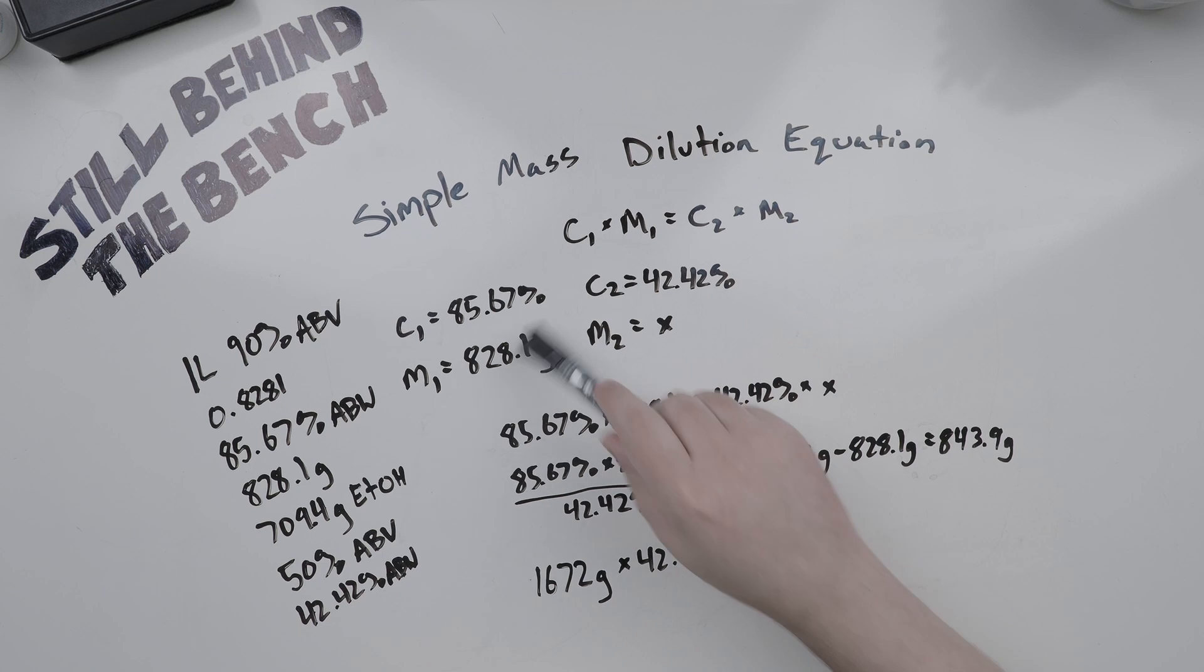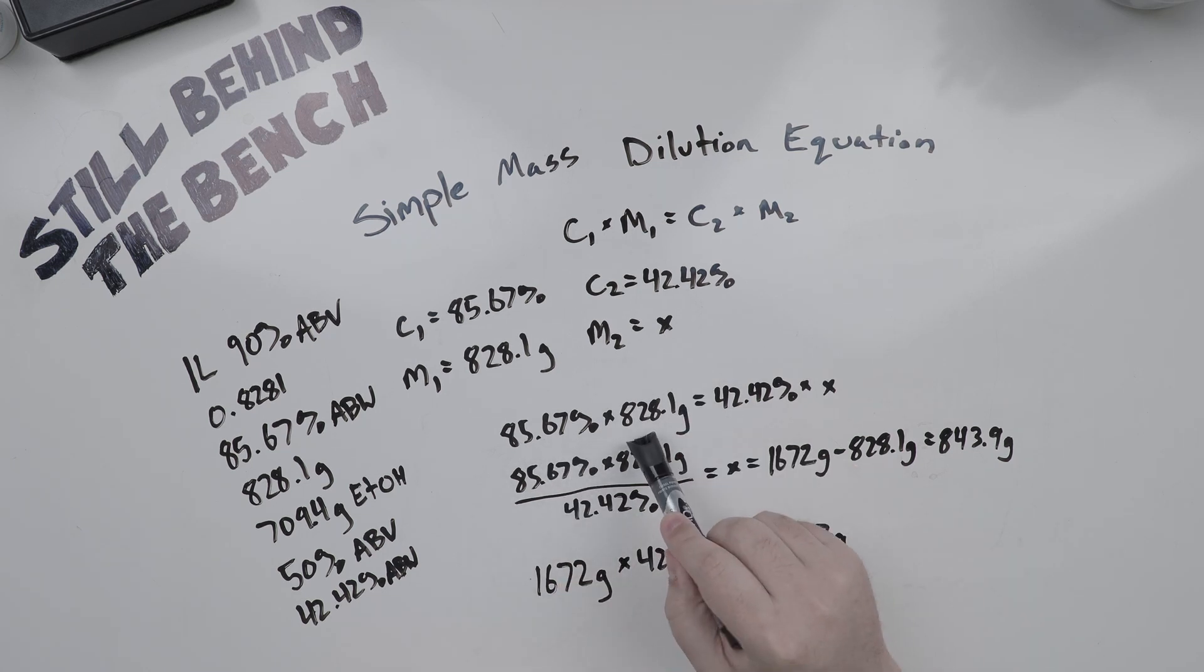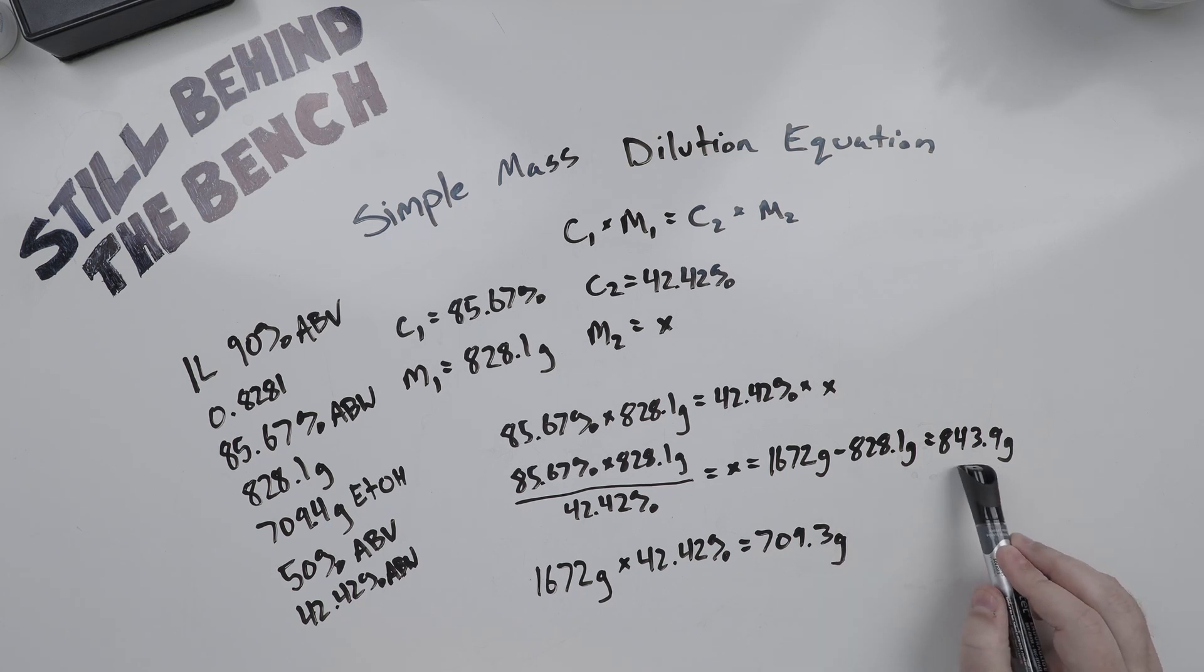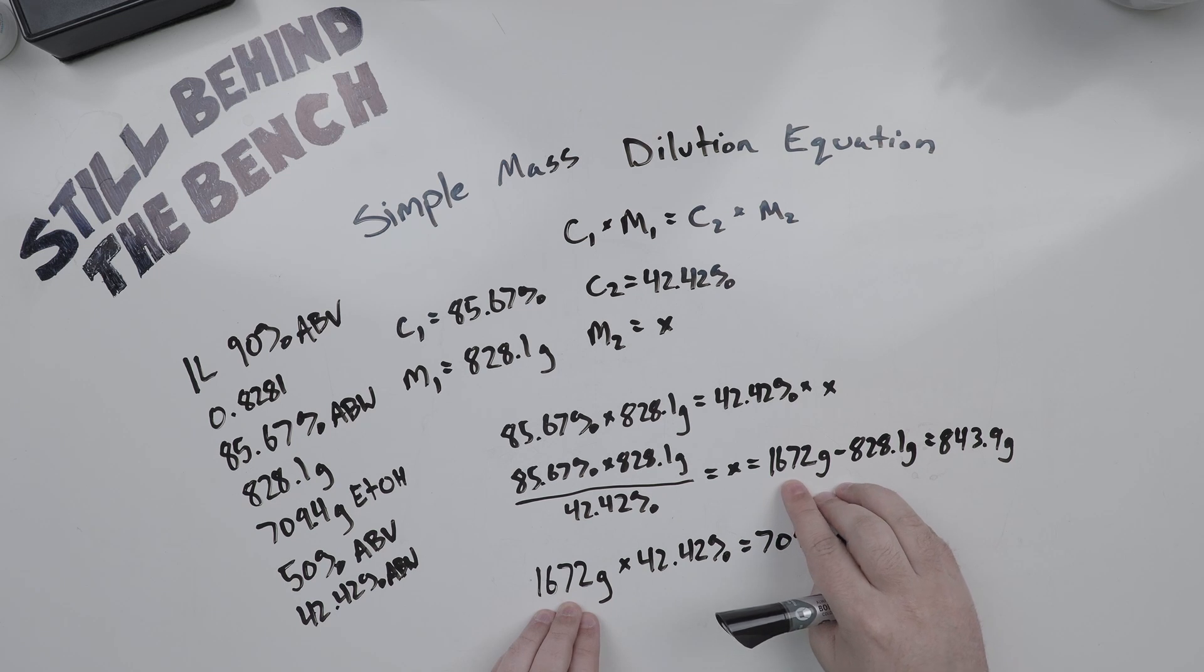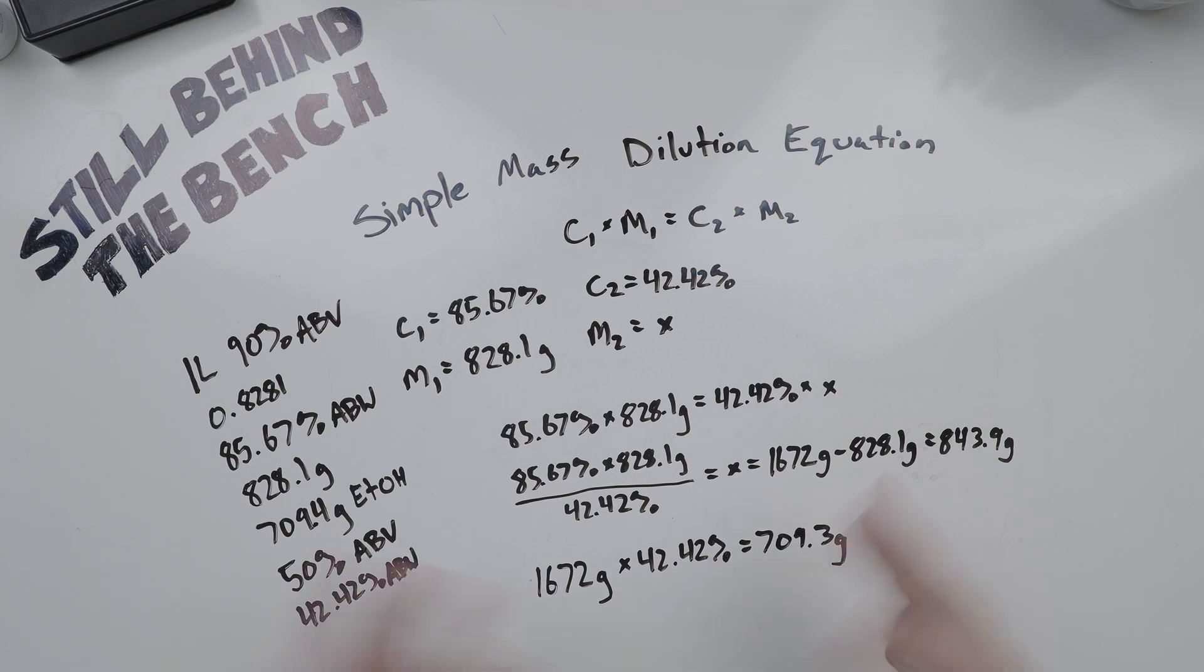And let's say we want to dilute that down to 50% ABV, which equals 42.42% ABW. 85.67% times 828.1 grams equals 42.42% times X. Divide both sides by 42.42%, and X equals 1,672 grams. Subtract the original, and that means we need to add 843.9 grams of water. Just to back check our math, if we check what 42.42% of 1,672 is, we get 709.3 grams, roughly how much ethanol we had in the original.